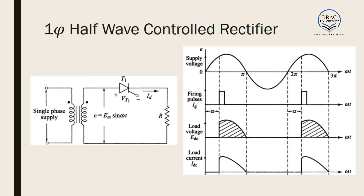In single phase half wave controlled rectifier, the circuit is almost similar to the circuit of an uncontrolled rectifier. Only the diode has been replaced by an SCR or a switch, which gives us control over when we want to switch on the output. When we give a current pulse at the gate of the SCR, this switch turns on and the input voltage is mapped to the output voltage. The current also follows the same direction.